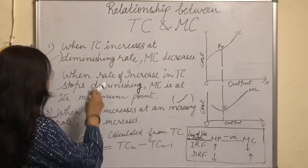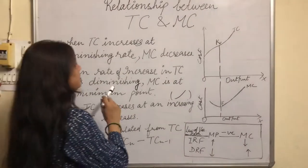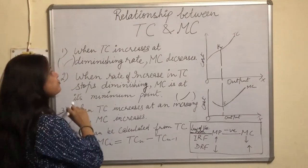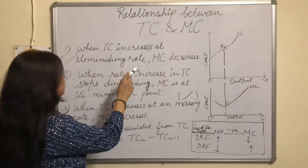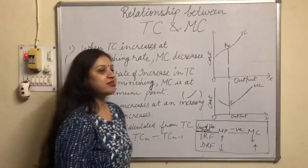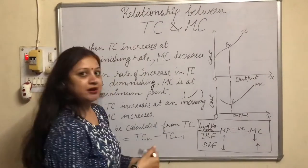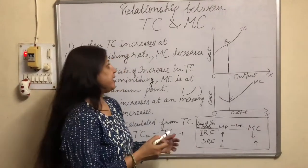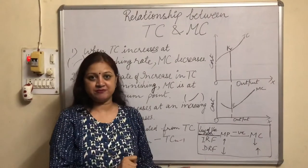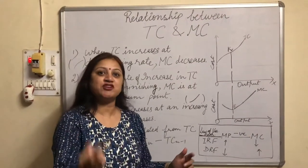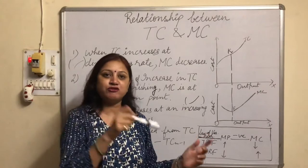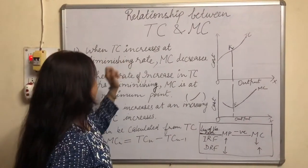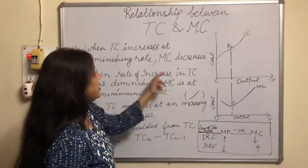I have written some points here and on the basis of these points I have made diagrams. Let's see the first point. When TC increases at a diminishing rate, MC decreases. I earlier told you in my earlier videos that MC is the rate of TC, MP is the rate of TP, and MR is the rate of TR. So when TC increases at a diminishing rate, MC decreases.